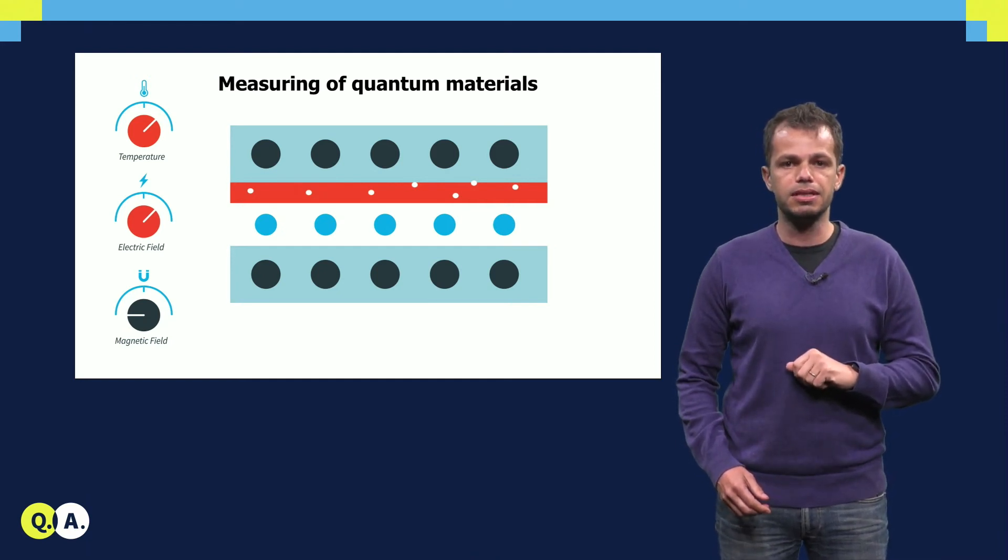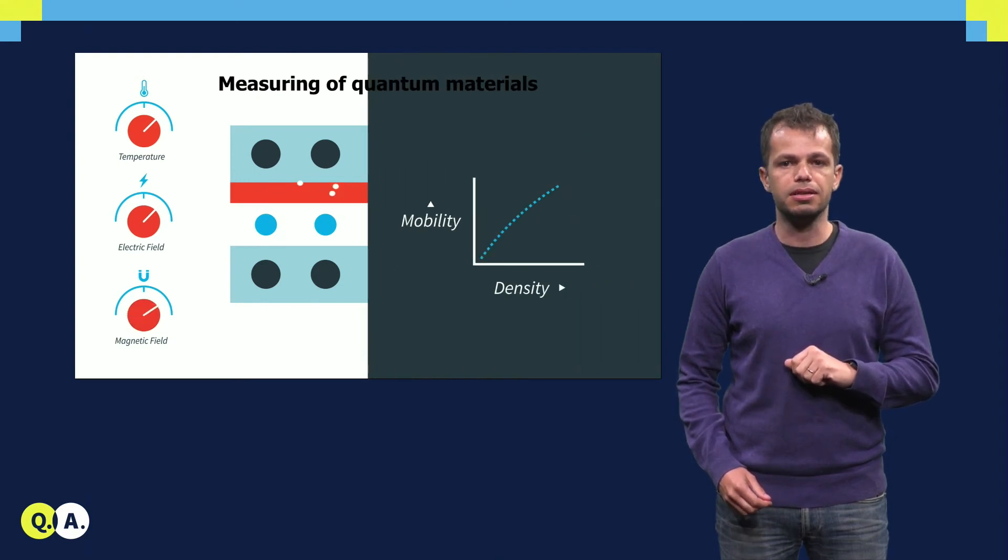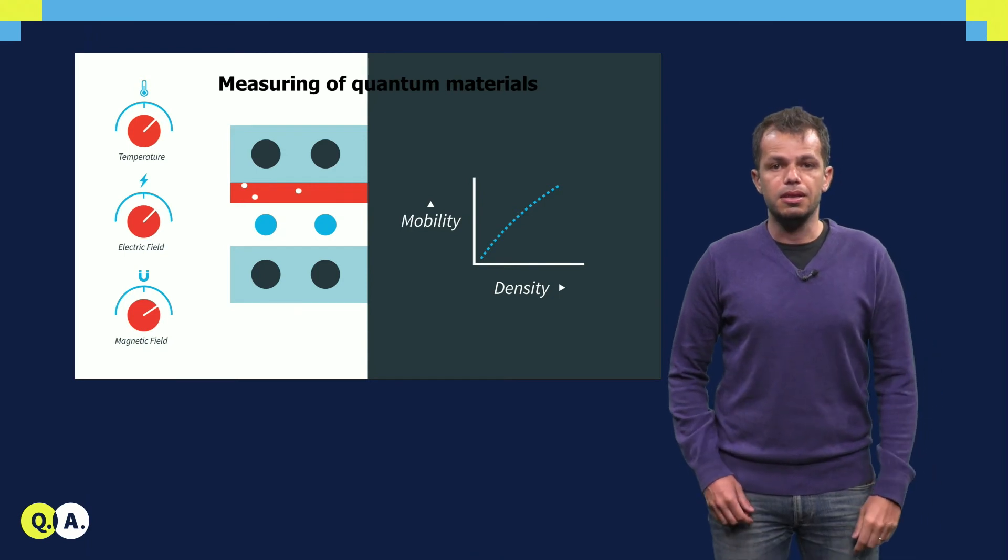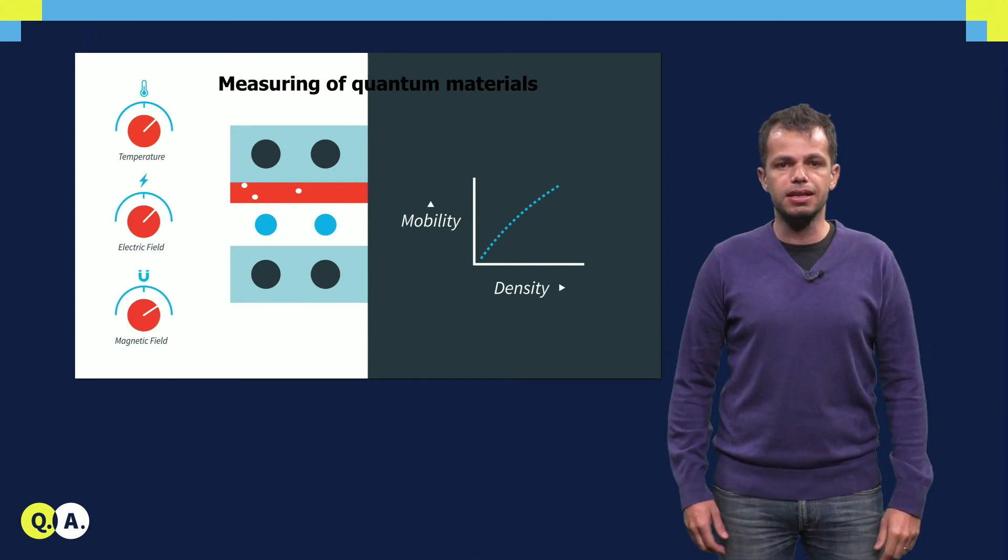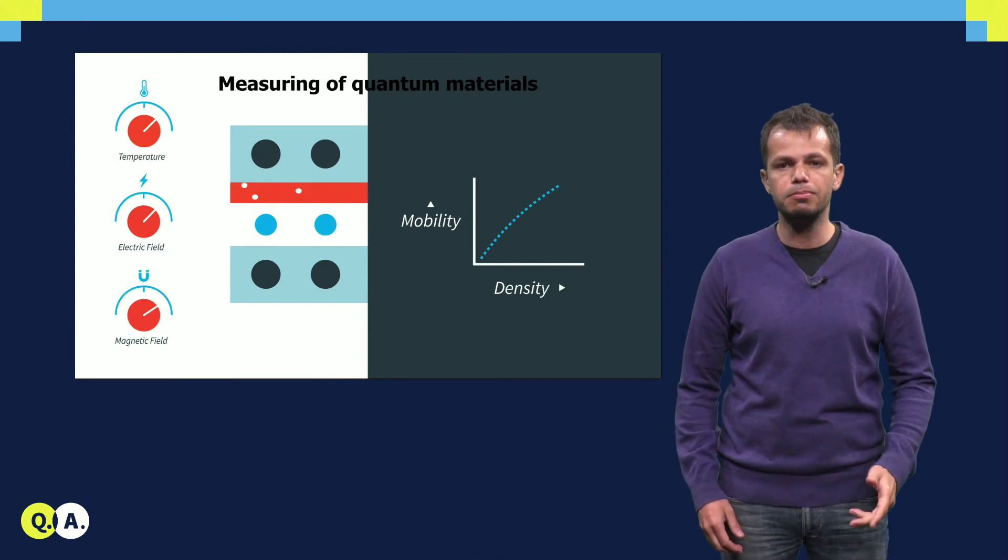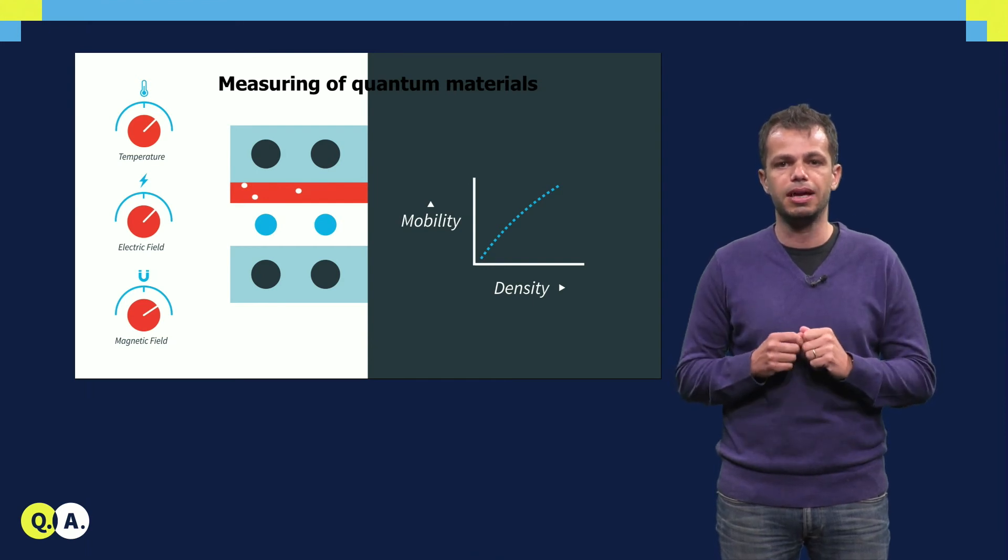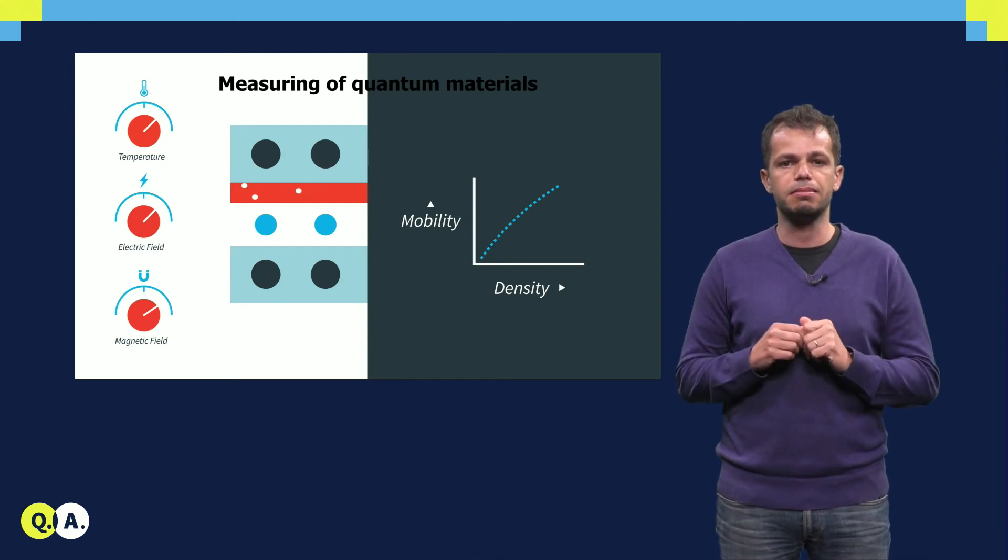By studying how electrical resistance of such channels responds to a magnetic field, we are able to measure the number of electrons in the channel and their mobility. The mobility tells us how fast electrons can travel in such channels and is an indication of the disorder in the system. The higher the mobility, the lower the disorder and there will be a better chance of fabricating many qubits with similar properties.